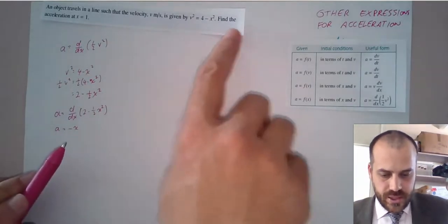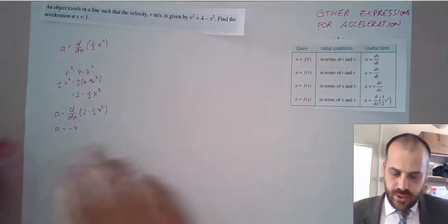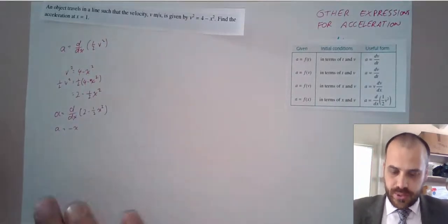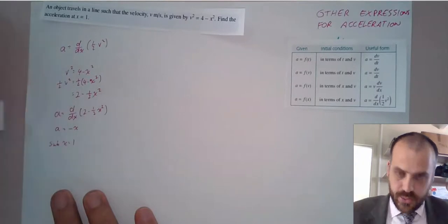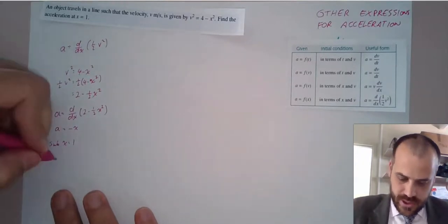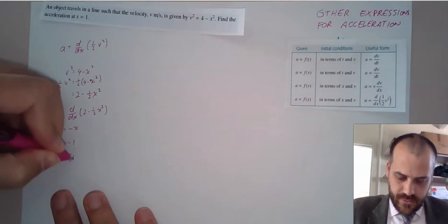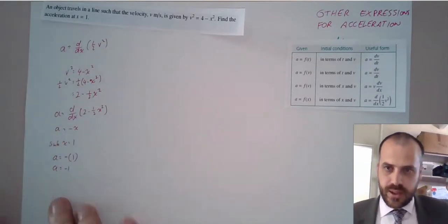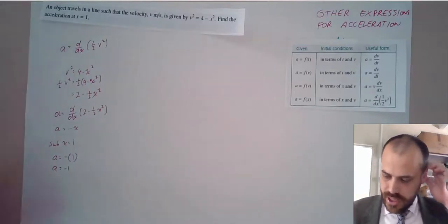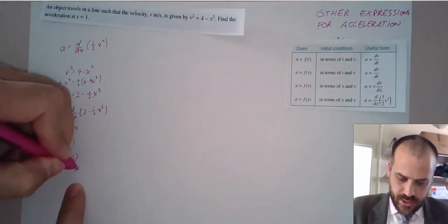It says find the acceleration at position x equals 1, so this is really simple now. We substitute x equals 1 into our equation and we can say that the acceleration is equal to negative 1. That's the end of this question — we should put some units on here as well.